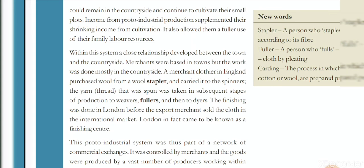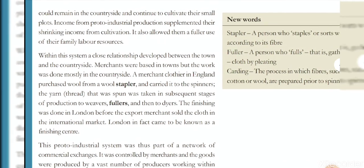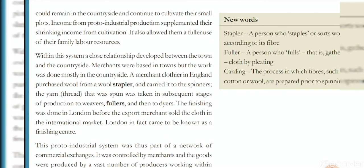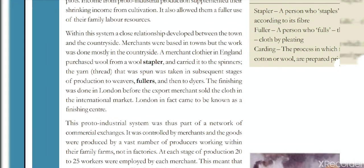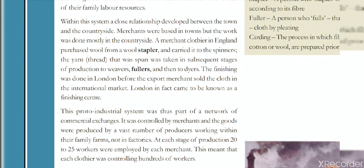As one example, a merchant clothier in England purchased wool from a wool stapler and carried it to the spinner. The spun yarn was then taken through subsequent stages of production — to weavers, then to the fuller, then to dyers — and the finishing was done in London. The stapler sorted wool according to fiber; the fuller pulled and gathered cloth. There were different centers for different parts of production, and the proto-industrial system was part of a network of commercial exchange. This was the early phase before any factory system was established.